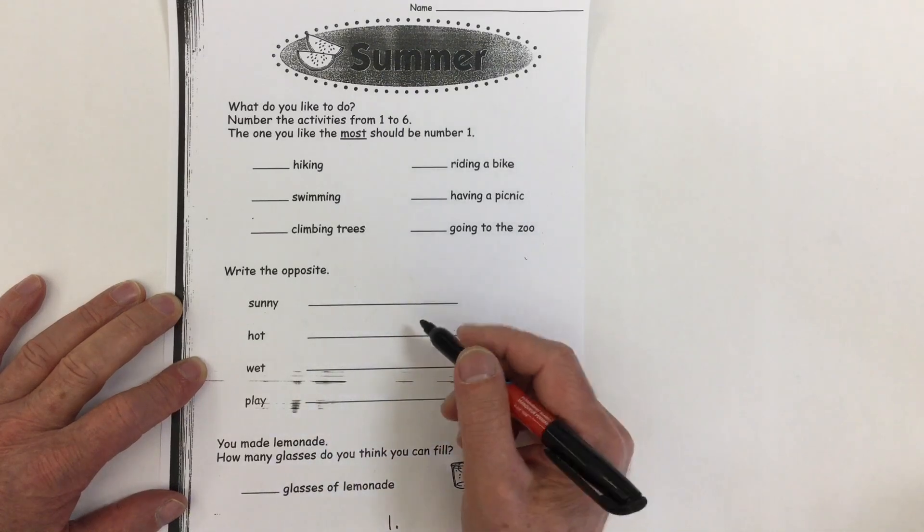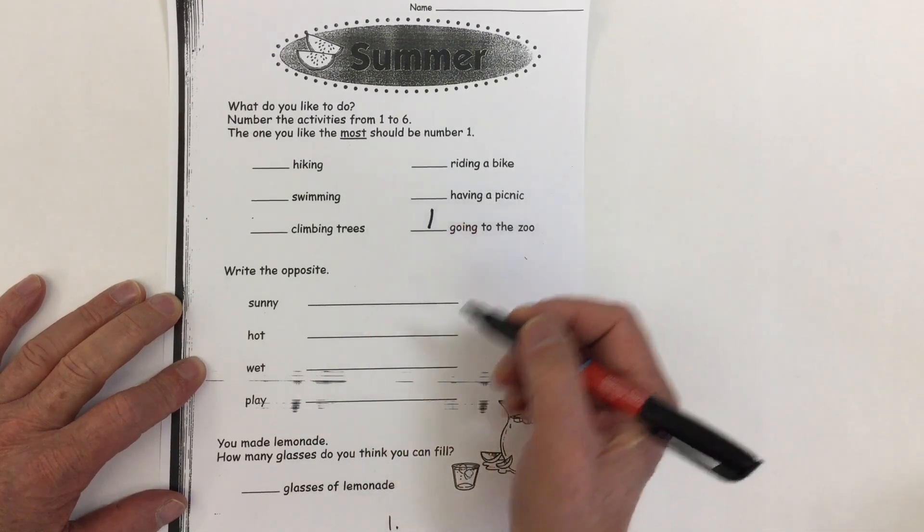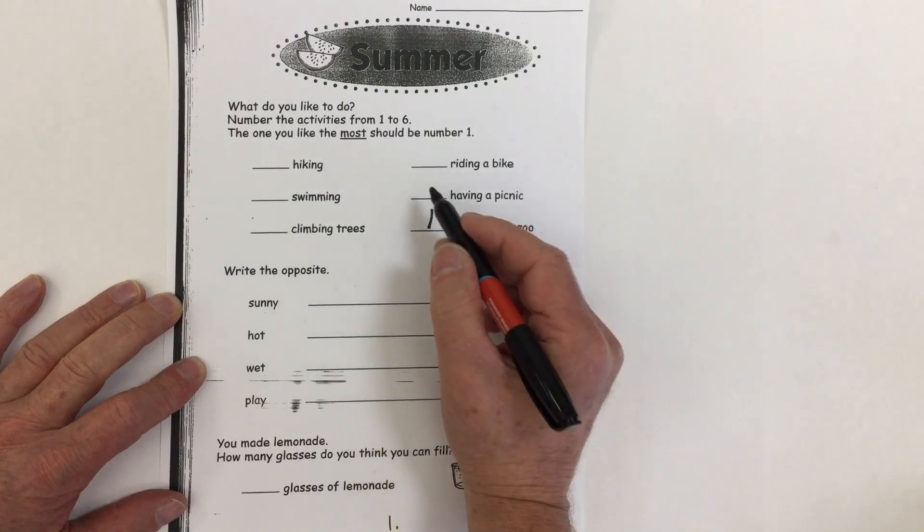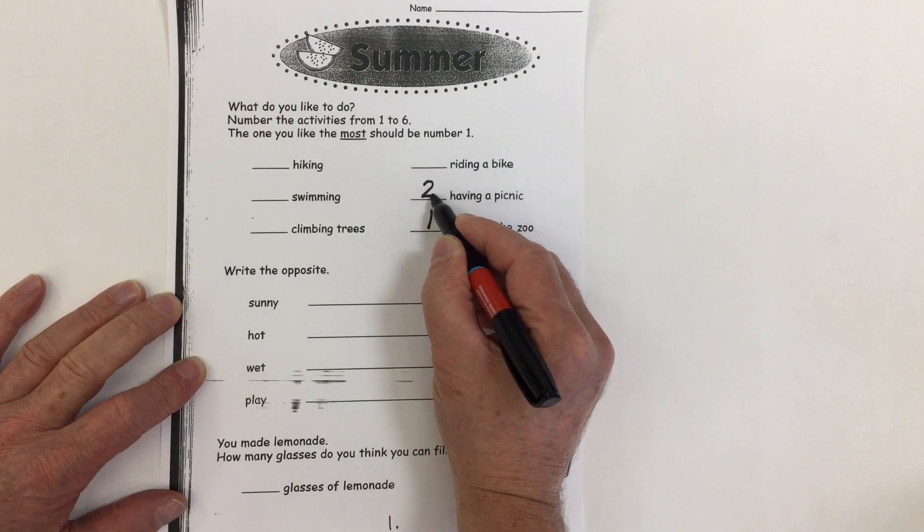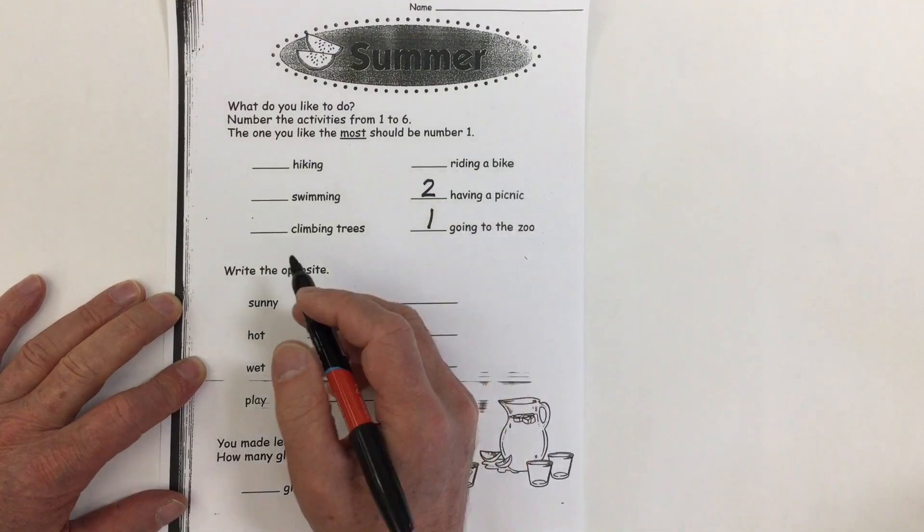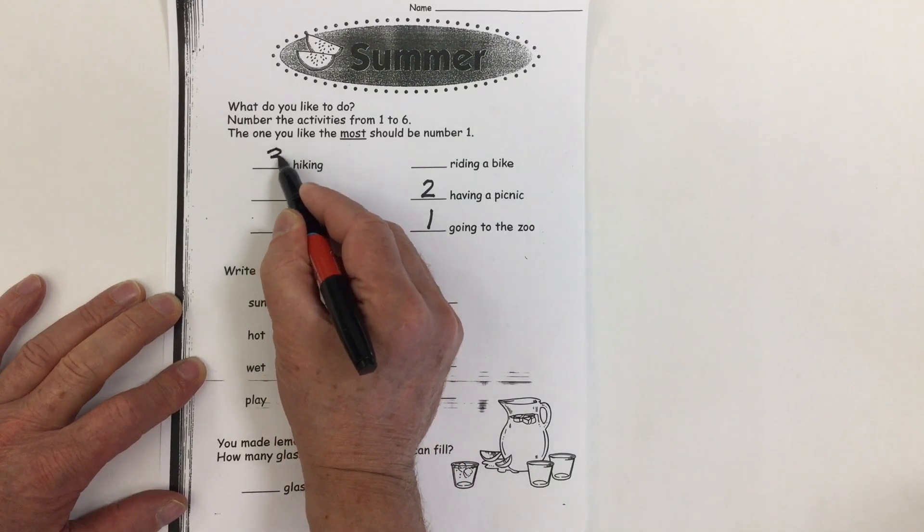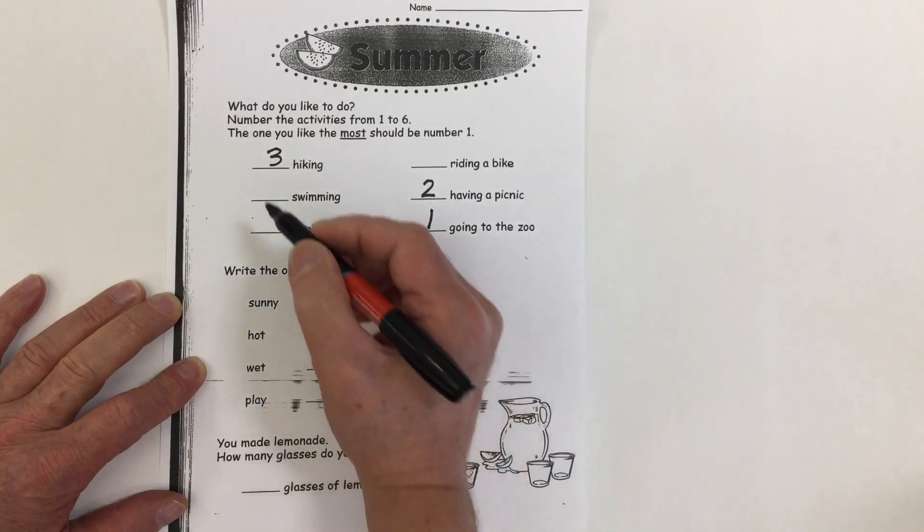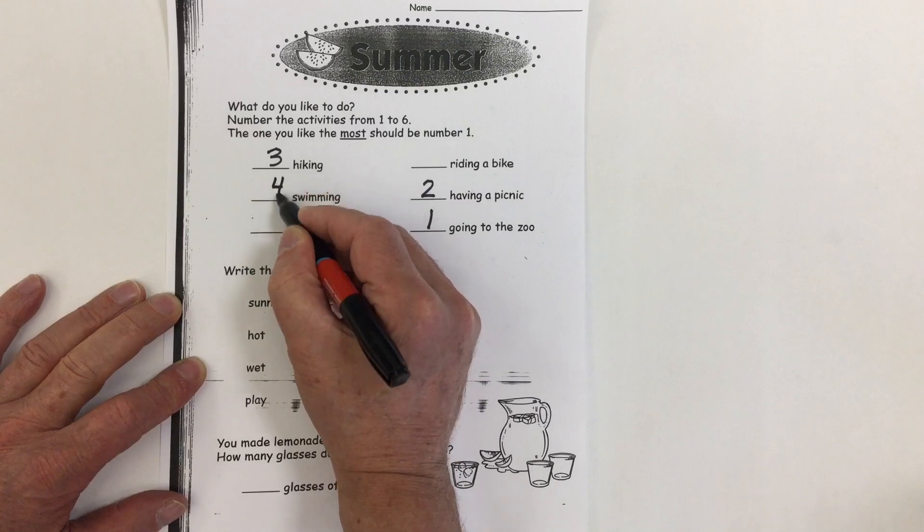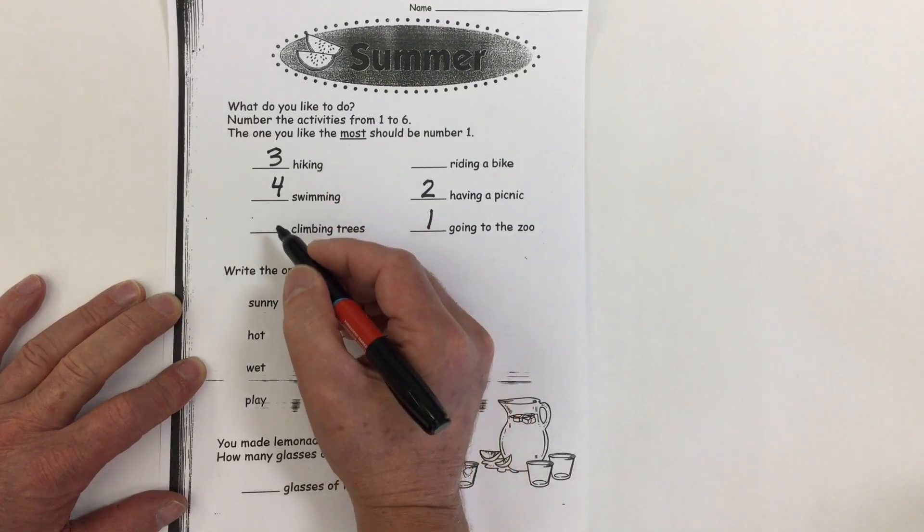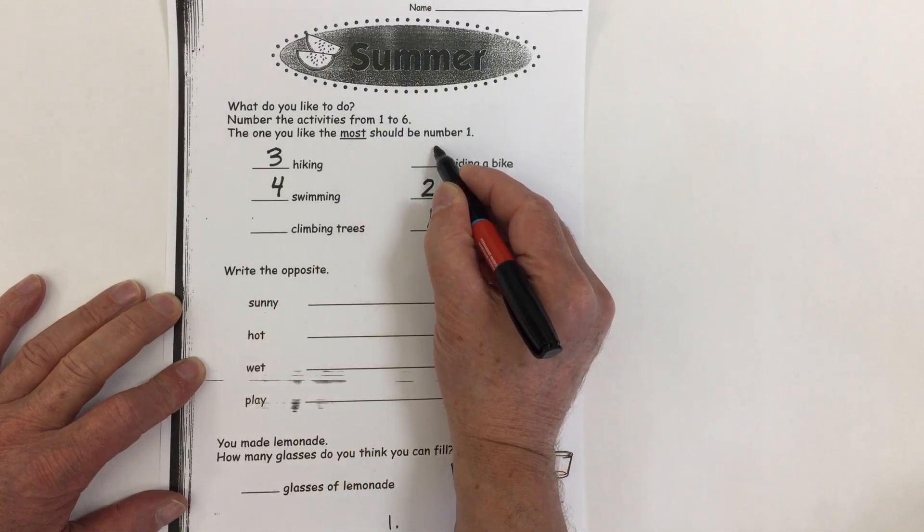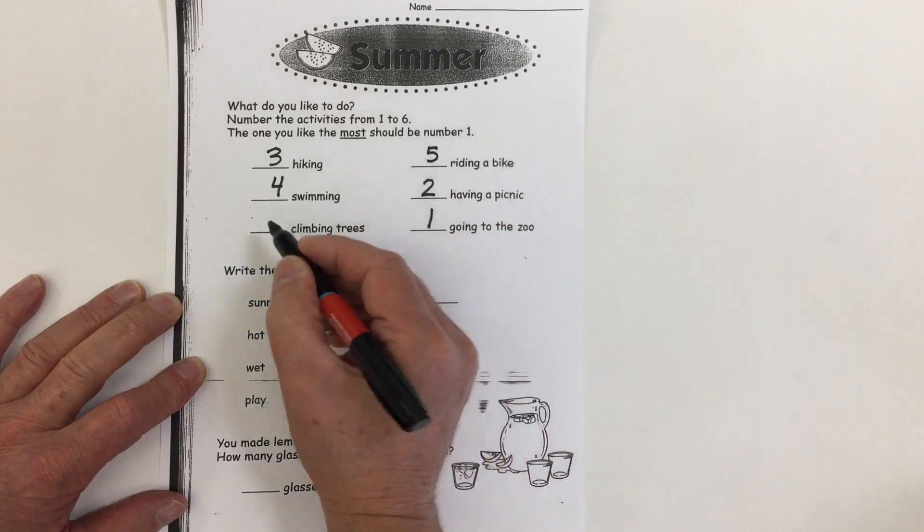Well for Mr. C, let's see. I like going to the zoo and I like having picnics. And then I would say I like to go for a hike. And I love going swimming. And then climbing trees and riding a bike. I don't do that very often so I'm going to make those my last two.